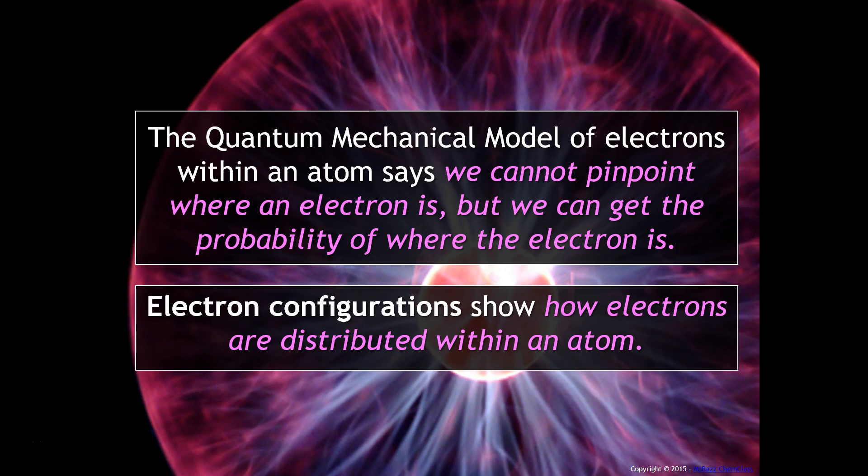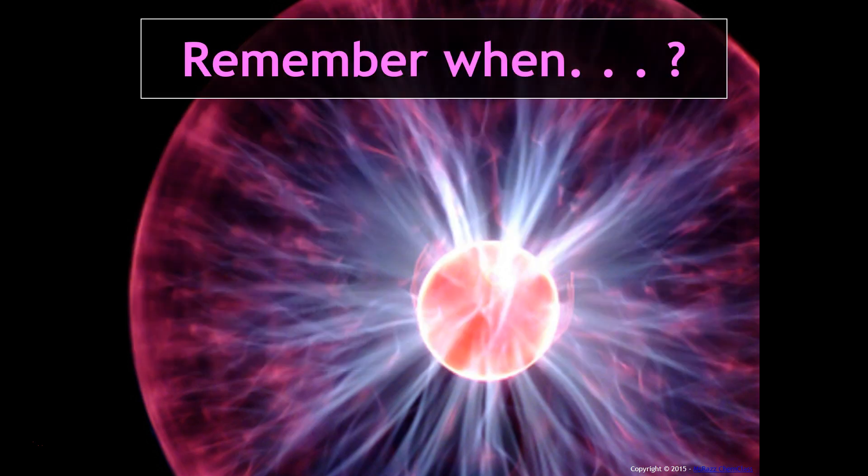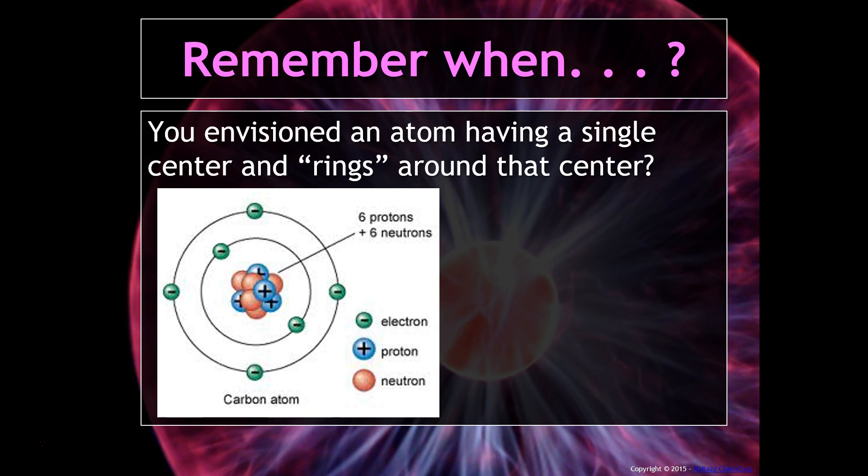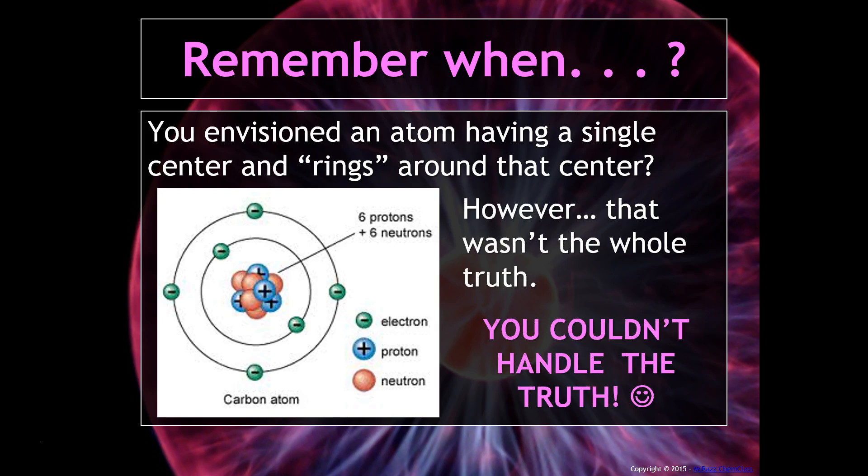Electron configurations is what we will use to show how electrons are distributed within an atom. Remember when you were back in middle school and your teacher probably put a picture of an atom up that looked something like that? Well, this wasn't the entire truth.